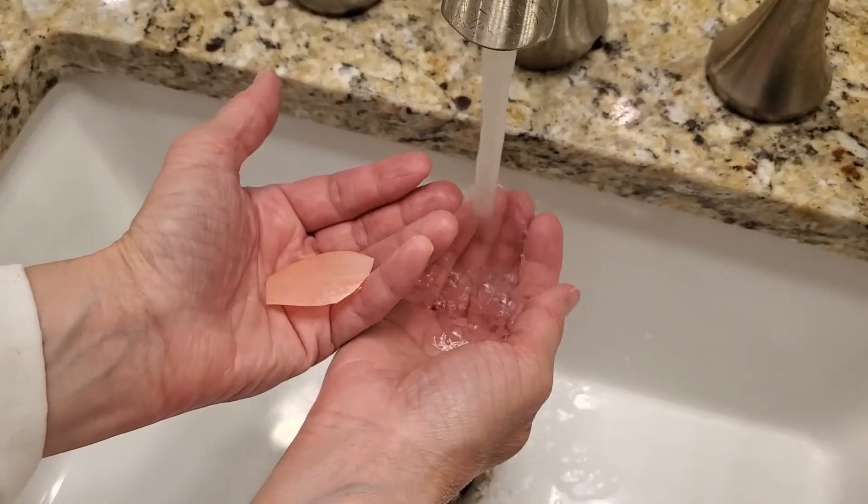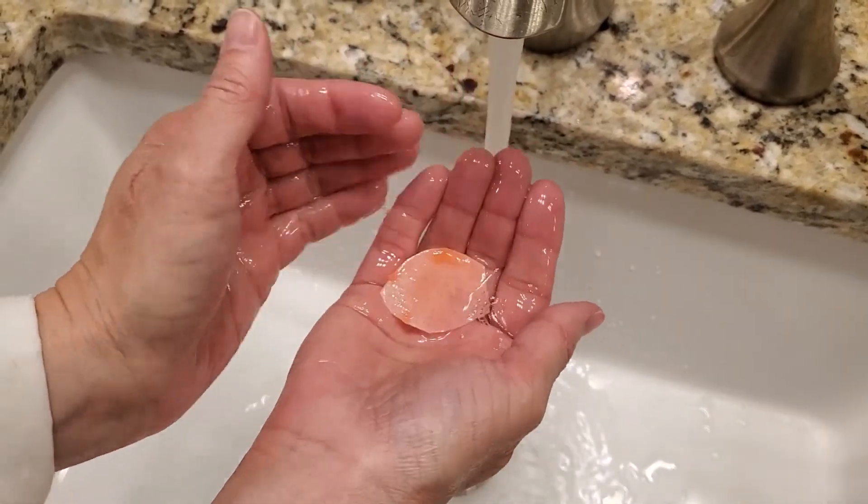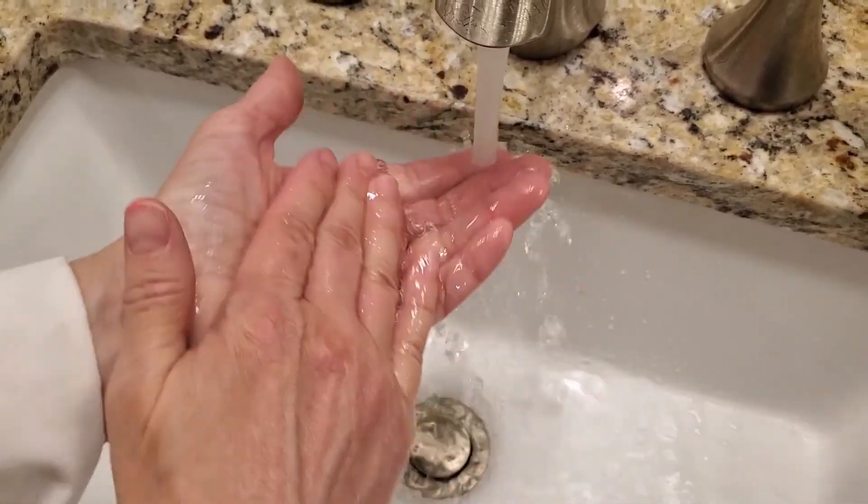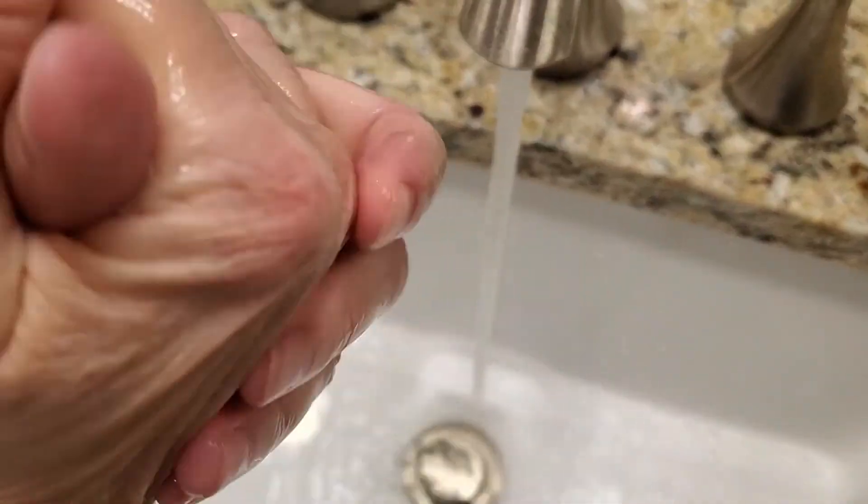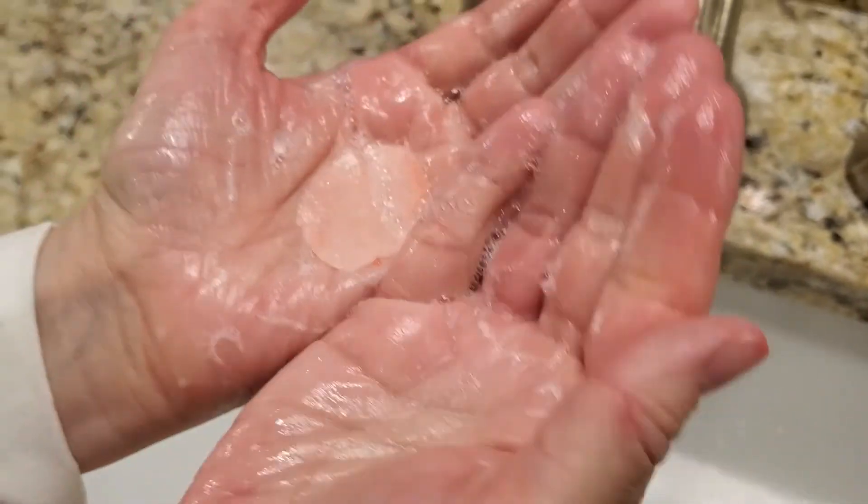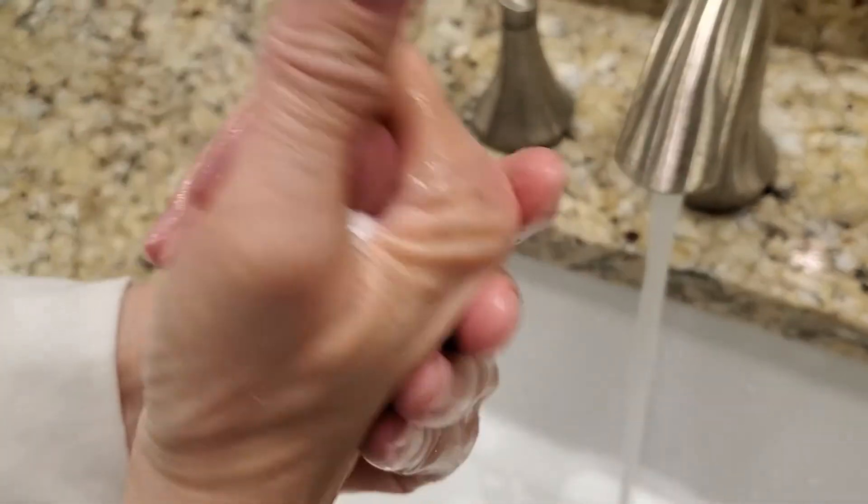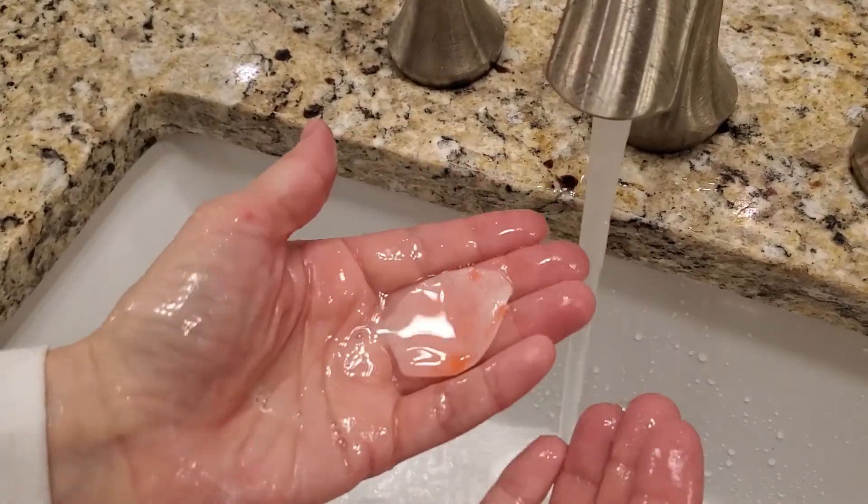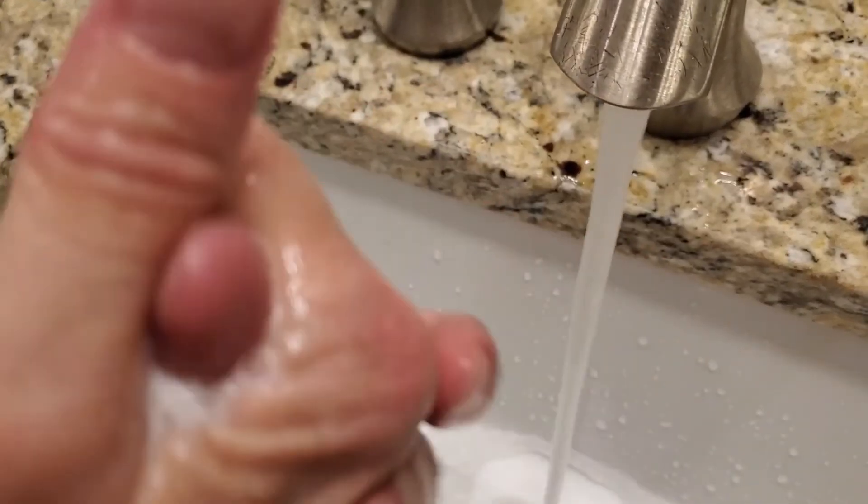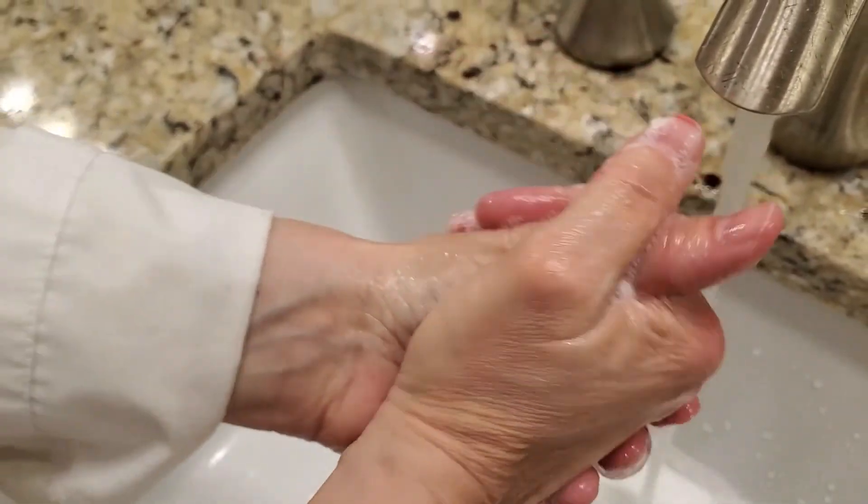I'm going to show you how to use the soap paper. So you're going to put it in your hand and it's going to lather. I don't know if you can see that, but it's lathering pretty good. And then as you continue to lather it, the soap will start to deteriorate and become smaller.